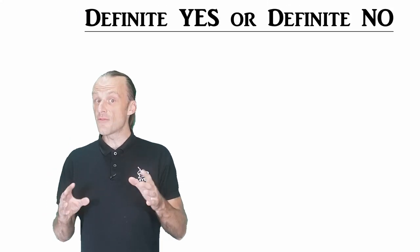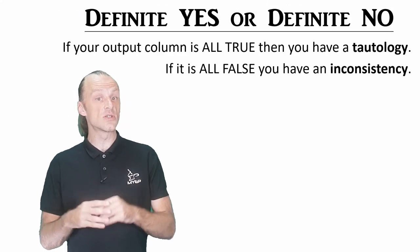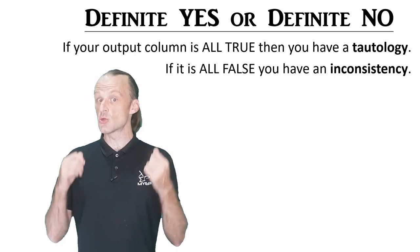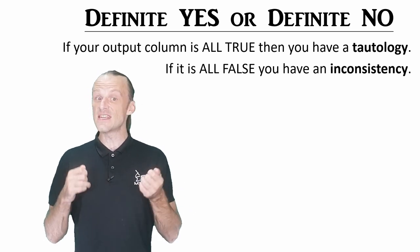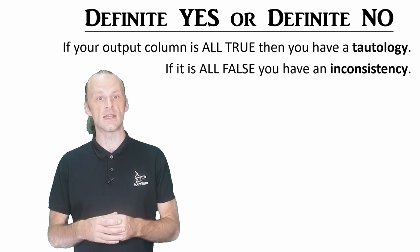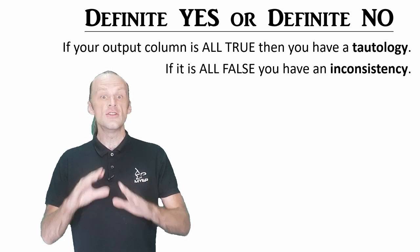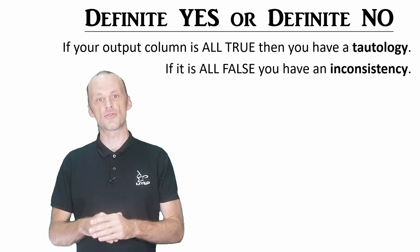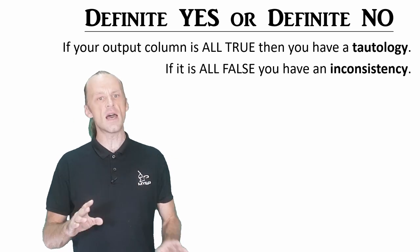There's a special name for a statement which is true in all situations. This is a tautology. And if a statement is false in all situations, we call it an inconsistency. A tautology is true no matter what the input truth values. It could never be untrue.